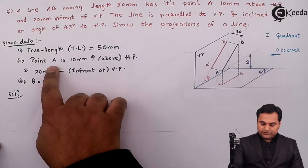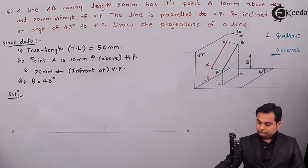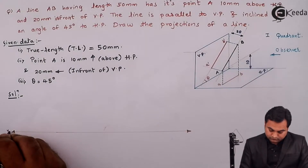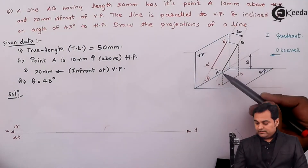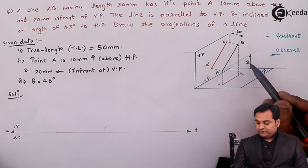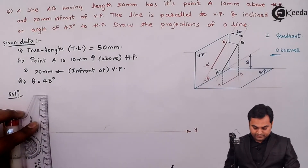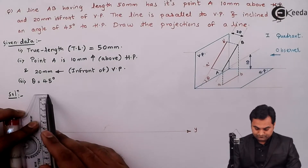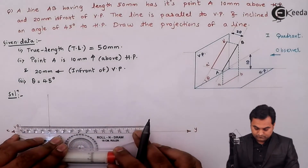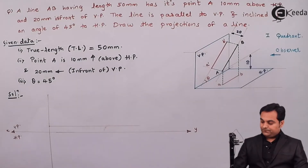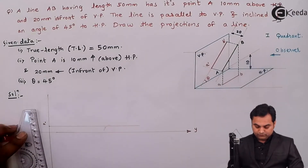First I am going to mark point A — 10 mm above HP and 20 mm in front of VP. Here is the XY line, then VP and HP. For 10 mm above HP, that distance will be visible in the front view. I am drawing a light vertical line and marking 10 mm above HP — that point is A dash.